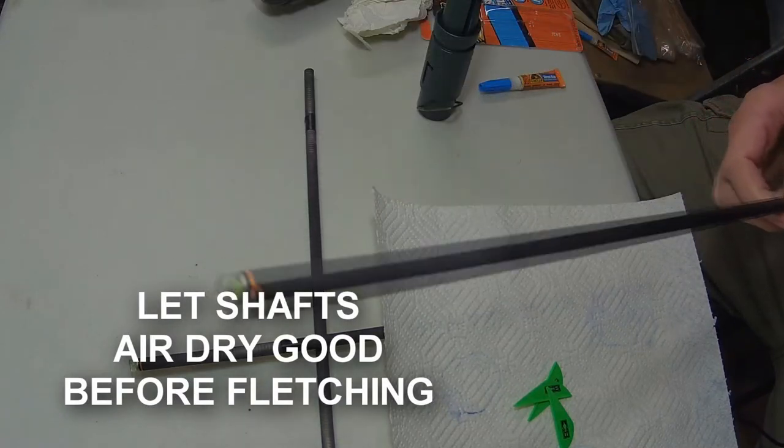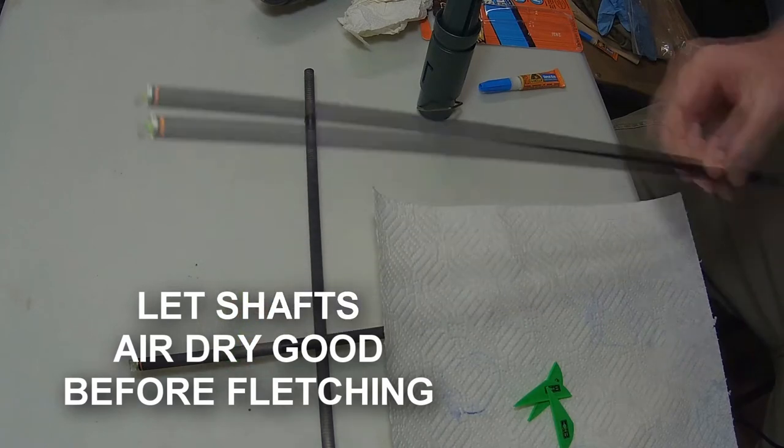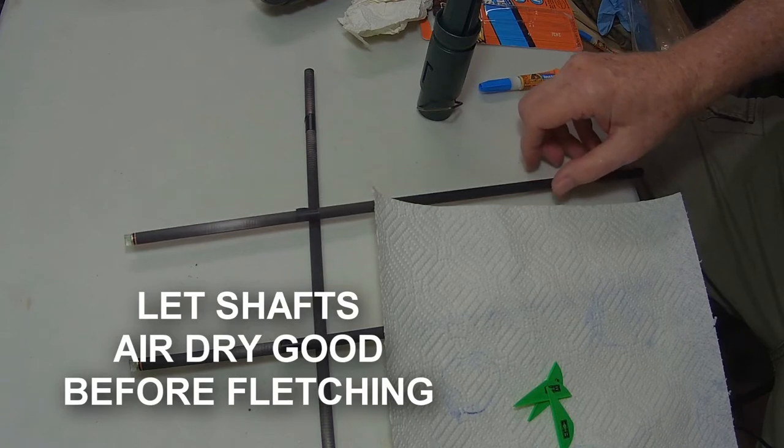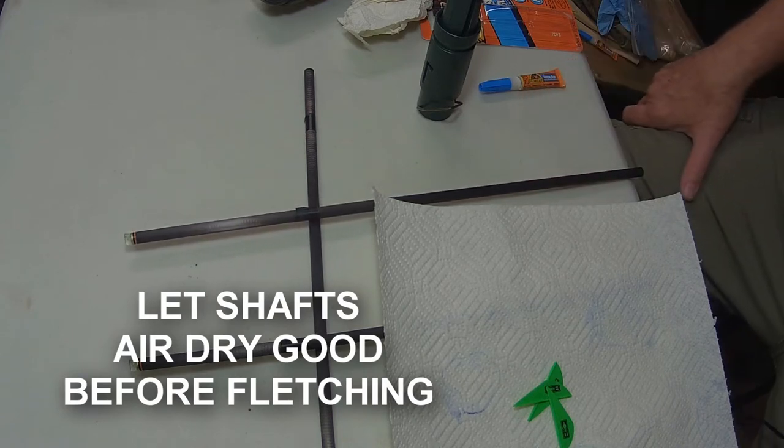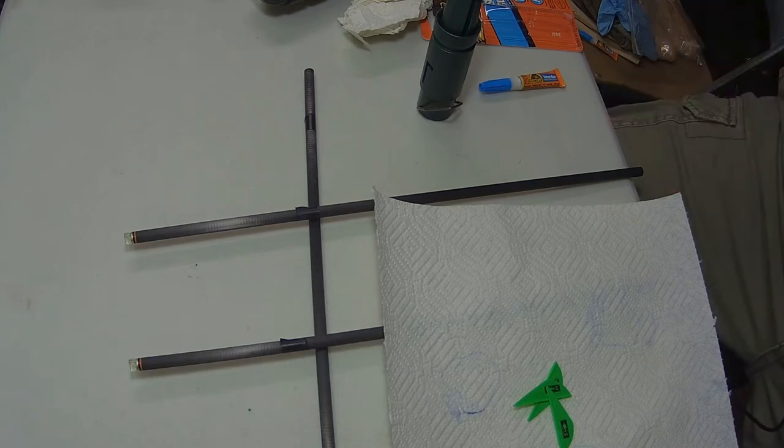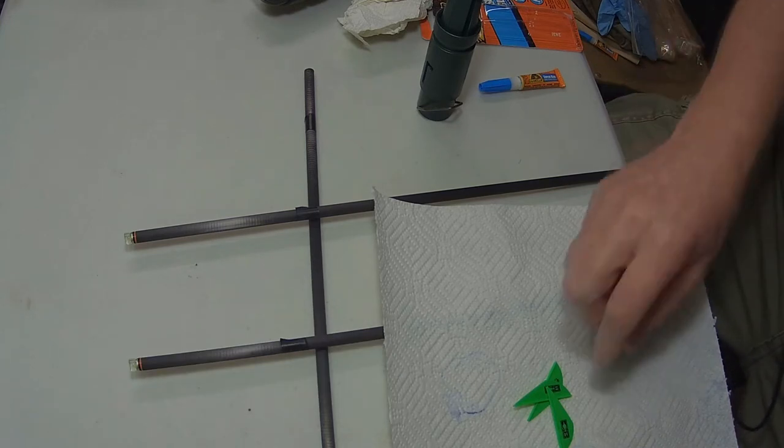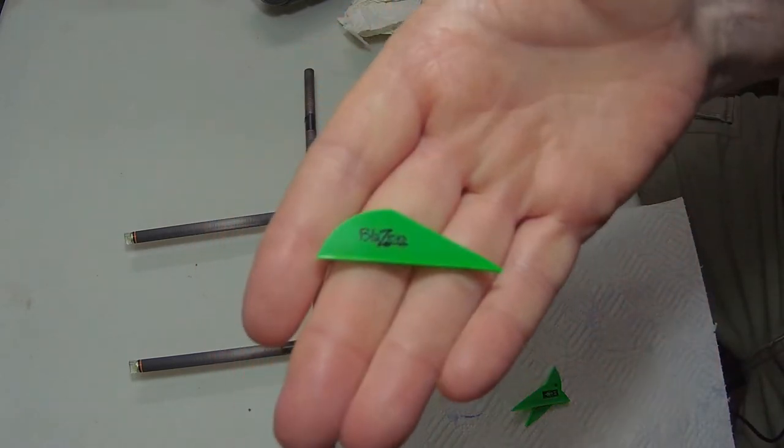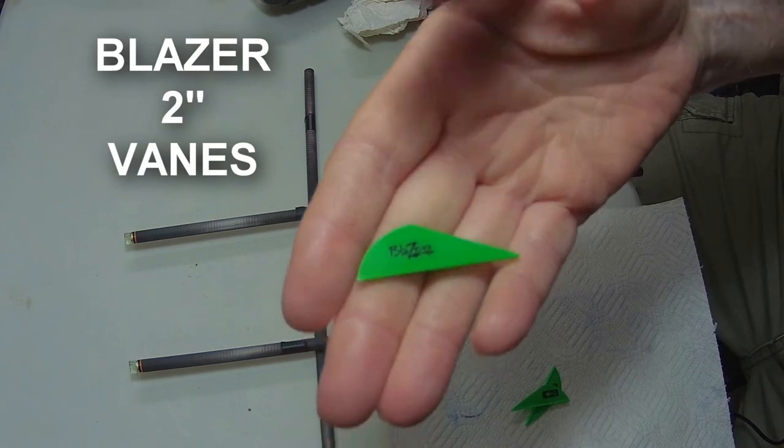So we're getting ready to fletch them. The tools and items we're going to use to fletch these Spinal Tap arrows for a crossbow - we'll be using Blazer 2-inch vanes.